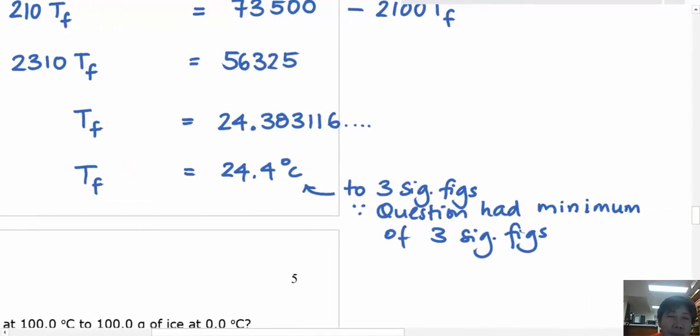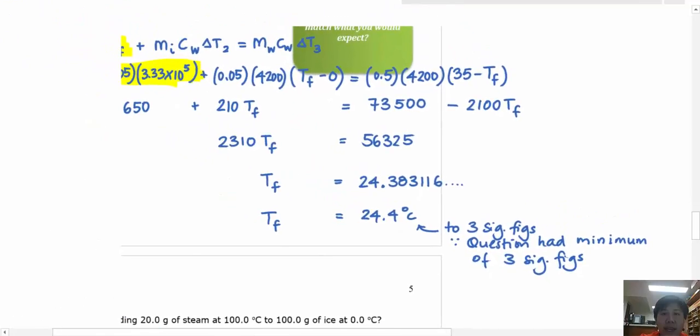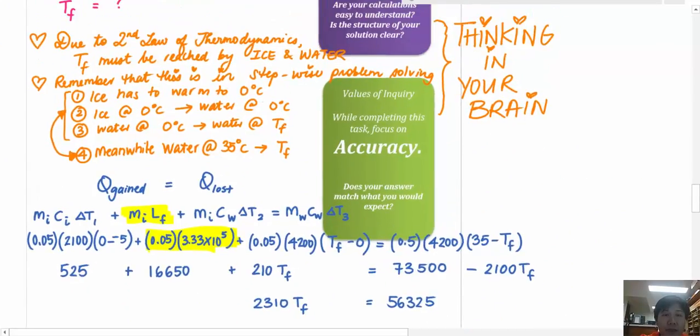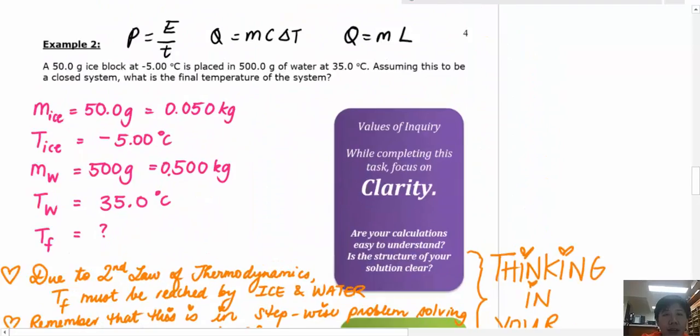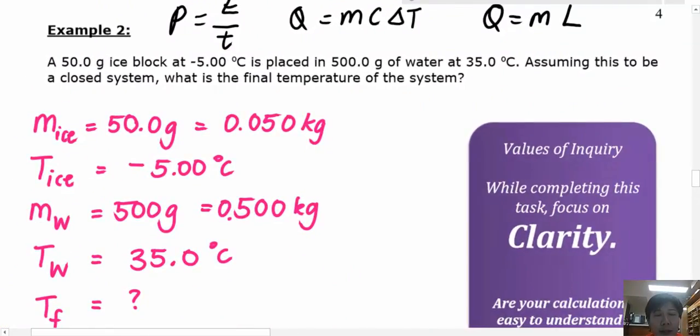I've rounded to three significant figures because the question itself had a minimum of three significant figures. What do I mean by that? And why can't I write the final answer as 24.4? Because if I go back to the top here, the number that has only three significant figures would be the negative 5.00 degrees or the 35.0 degrees. Those are all three significant figures. Remembering that zero after a decimal place with numbers at the front is actually significant. So there you go. That's example two.